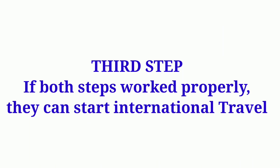The third step will be applied four weeks after the second, provided both the first and second steps work properly. In the third step, they can start international travel. If the first step is effective from 16th May, the second could be around 13th–14th June, and the third around 12th–13th July. This means students and those with valid visas may be able to arrive in Australia from around July.